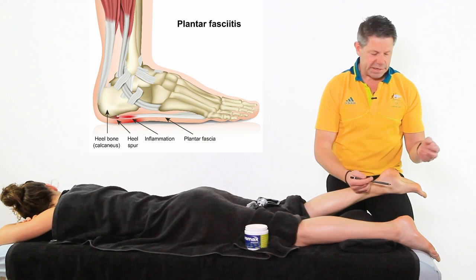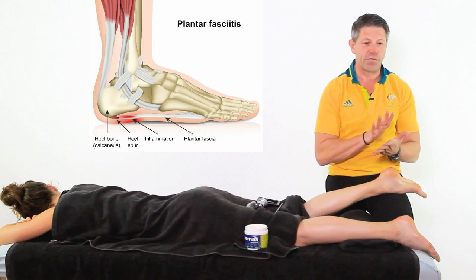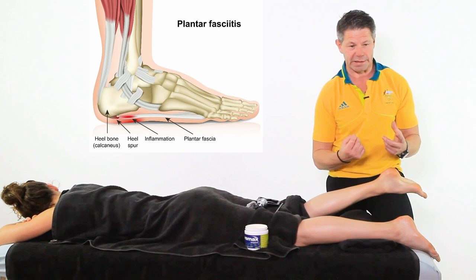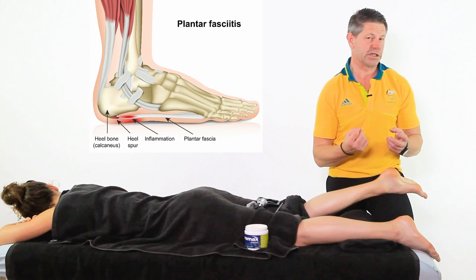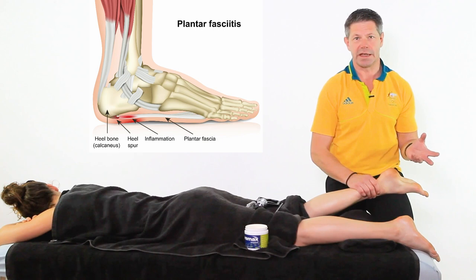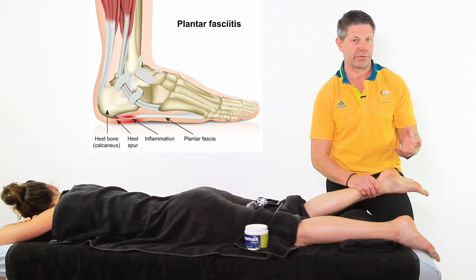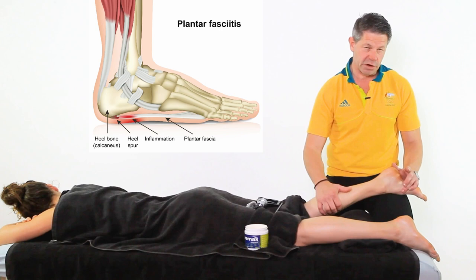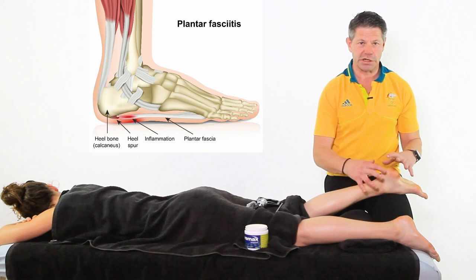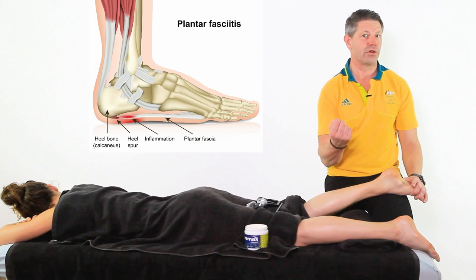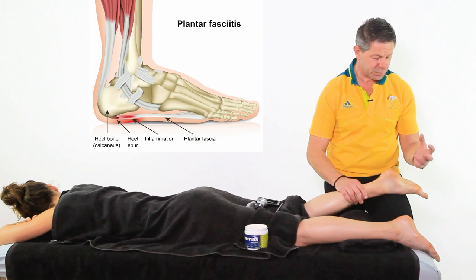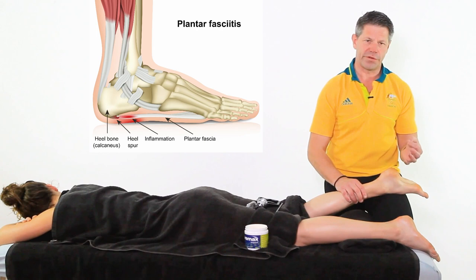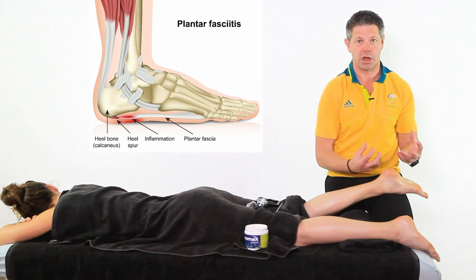A classic sign of plantar fasciitis is the first step out of bed in the morning feeling like walking on broken glass — this eases after a few steps. If it's very reactive, you'll feel it throughout most of your walking that day, and you'll start shifting your weight to avoid loading the foot. This biomechanical compensation creates further problems — potentially contributing to Achilles tendon pain and shin splints. All three conditions can coexist, and load is often a key driver.